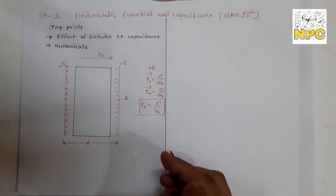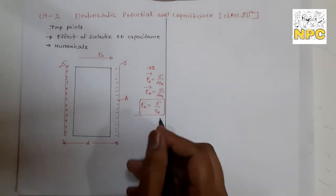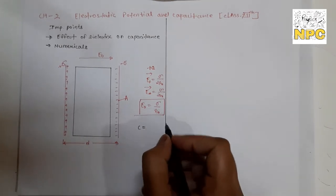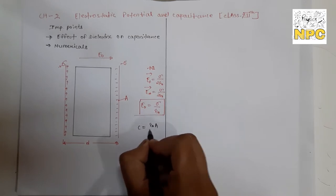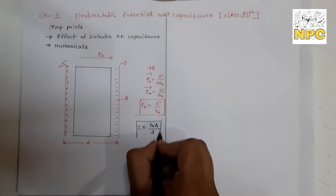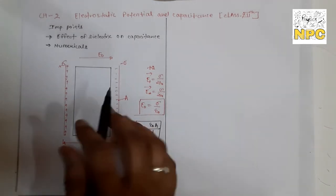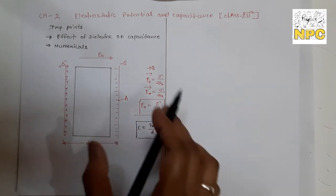Now let's talk about the capacitance of the parallel plate capacitor. We have derived that C₀ = ε₀A/d. This formula was derived in the last video lecture for the parallel plate capacitor with air between the plates.